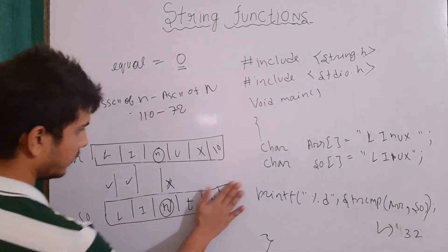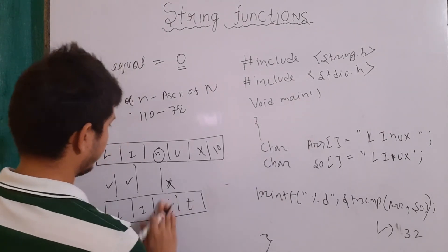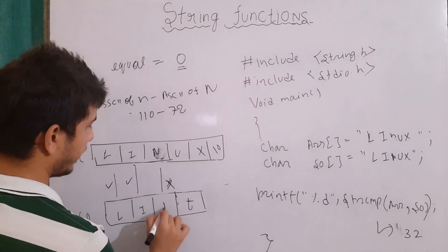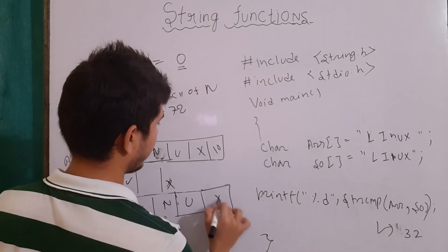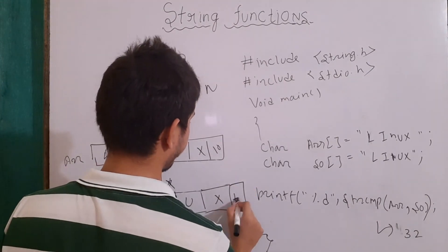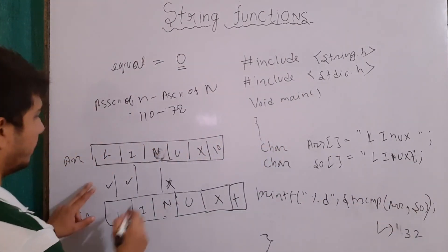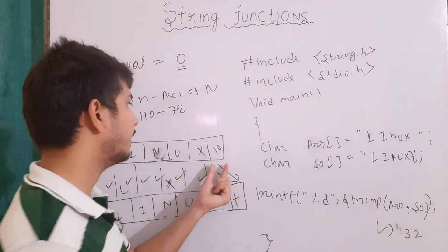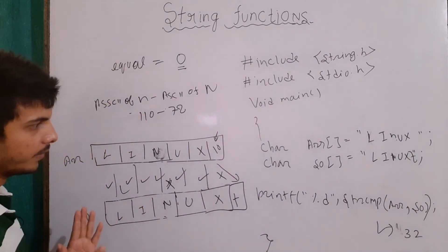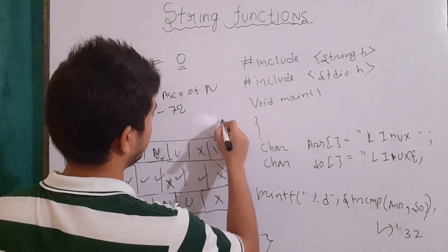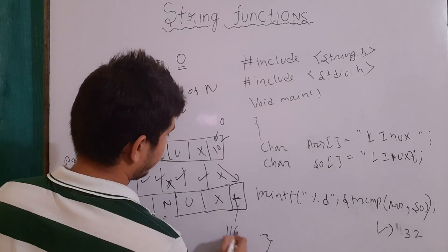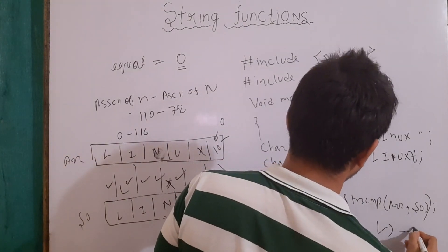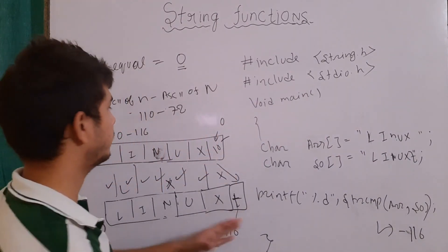It returns the difference of ASCII values of the first mismatched character only — any other character after that doesn't matter. Also, the null character is also compared. For example, if one string ends at \0 (value 0) while the other still has a character like 't' (ASCII 116), the output will be 0 minus 116, giving minus 116. This is how we use the string compare function.